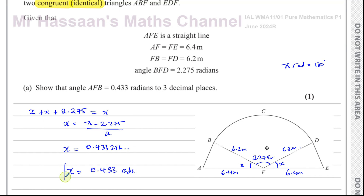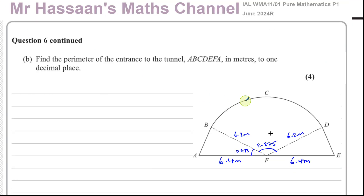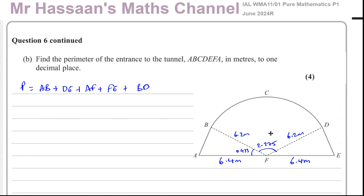For part b: find the perimeter of the entrance to the tunnel ABCDFEA in meters to one decimal place. The perimeter is the length of the whole outline of the shape, so it equals AB + DE (the same length) + AF + FE (both 6.4 m) + the arc length BCD. We know AF and FE already, so we need to find AB.